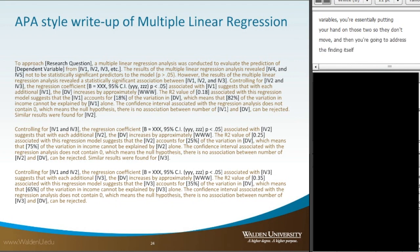So in controlling for variables one and two, variable number three was found to be statistically significant. Then you would explain the beta slope coefficient, the 95 percent confidence interval, and the level of significance that was detected. Then you would interpret what that slope coefficient actually means to the outcome.